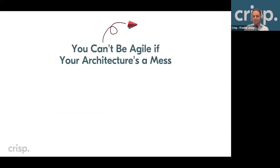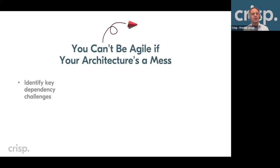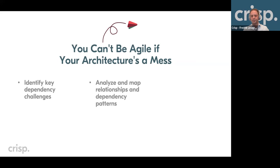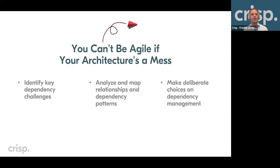I'm going to suggest that you can't really be agile if your architecture is a mess — at least, it makes it much harder. What I propose is for teams in this situation to identify the key dependencies and the key dependency challenges, try to analyze and map the relationships and dependency patterns, and then make deliberate choices on how to work with dependencies. My experience is that a lot of dependencies get added with very little thought about the long-term maintenance situation.